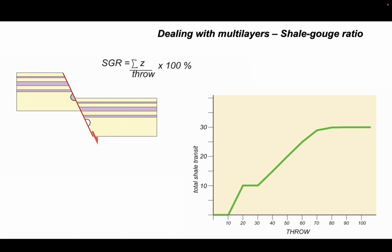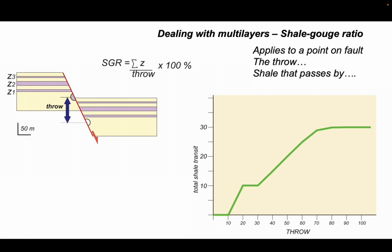So it applies to a single point on the fault plane. There's the total throw. Here are the shale thicknesses that by the time we accumulate all our throw, these are the ones that will have gone past that point on the fault.